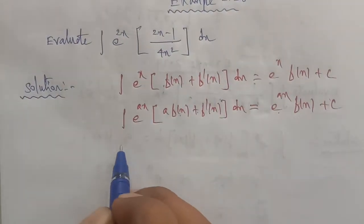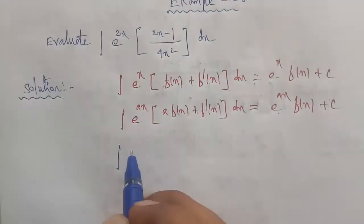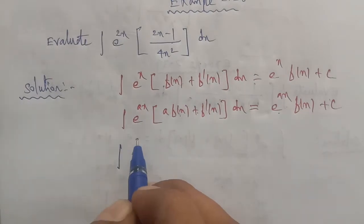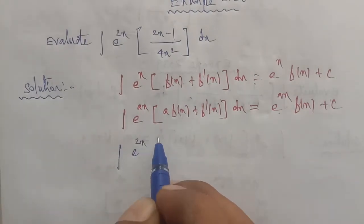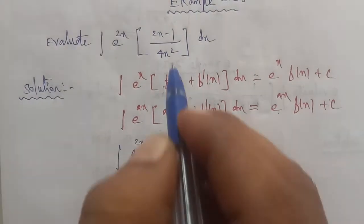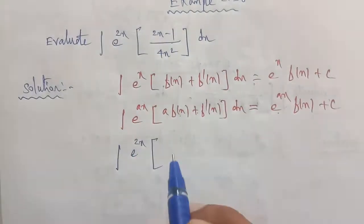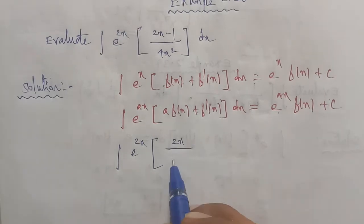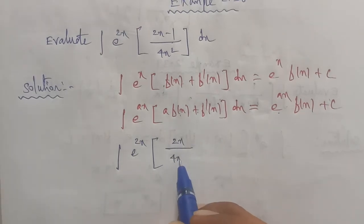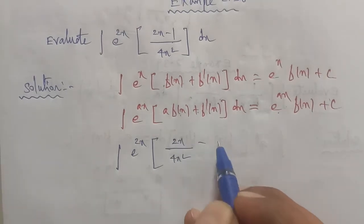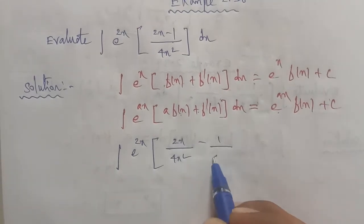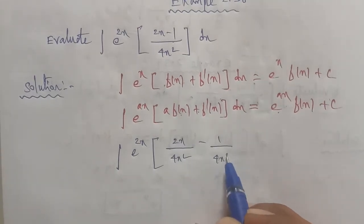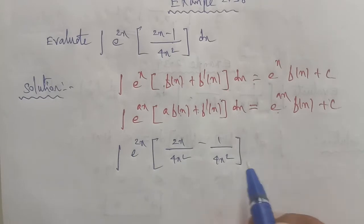The given integral is e power 2x. We split it as: integral of (2x by 4x square minus 1 by 4x square) dx.